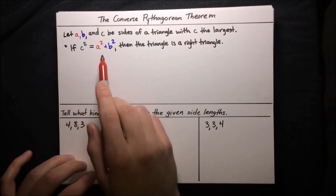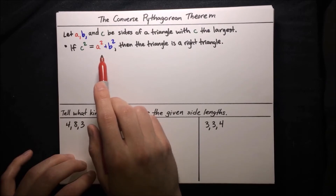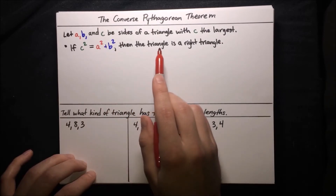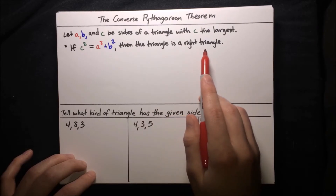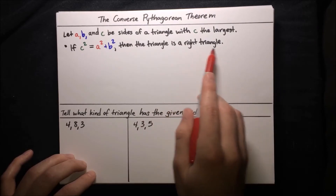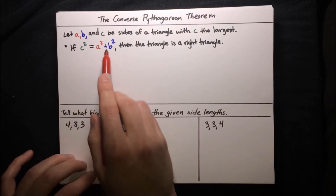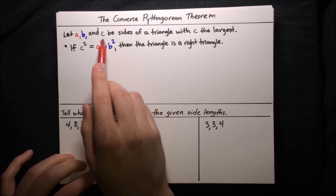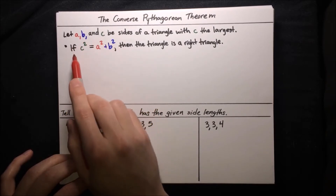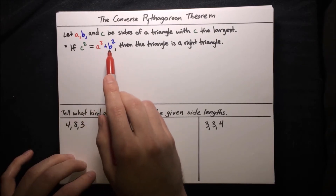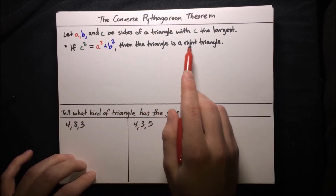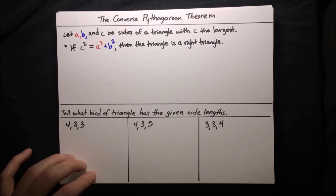This is the Converse of the Pythagorean Theorem because the Pythagorean Theorem goes the other way. The Pythagorean Theorem says that if we have a right triangle with legs A and B and hypotenuse C, then C squared equals A squared plus B squared. The Converse is just saying that if you have any triangle which holds this relation C squared equals A squared plus B squared, then the triangle is necessarily a right triangle. So basically we can tell whether or not a triangle is a right triangle based on its side lengths alone.